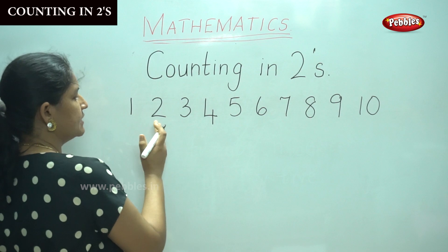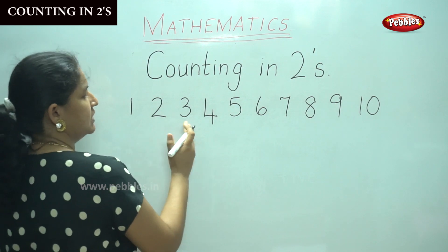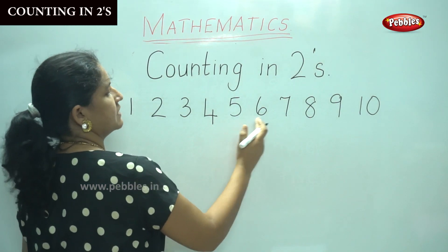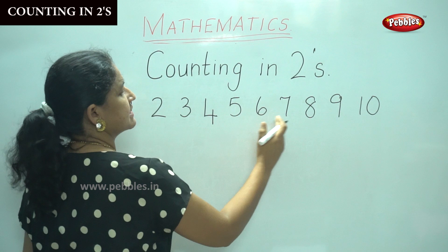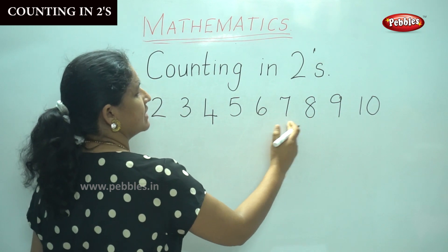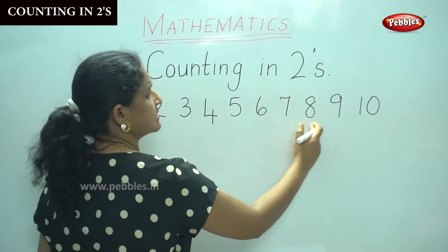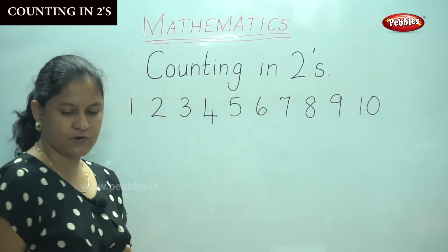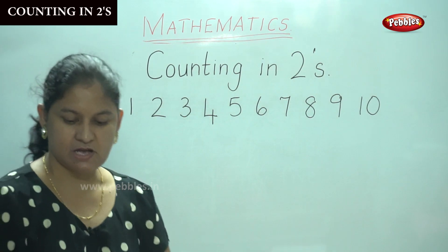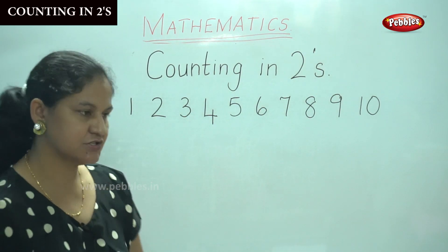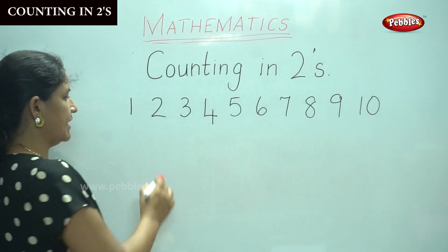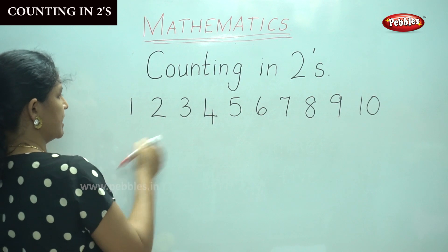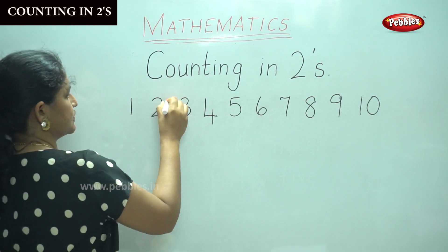1, 2, 3, 4, 5, 6, 7, 8, 9, 10. And now we are going to do counting in twos. You will add 1, 2. This is counting in twos.